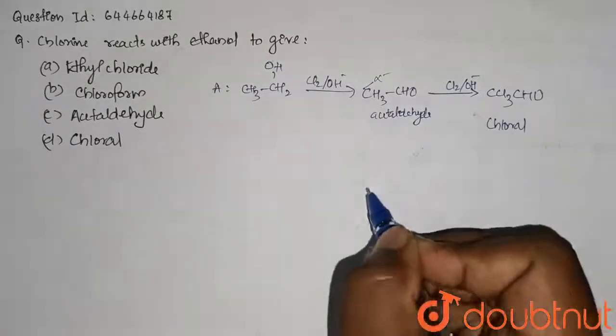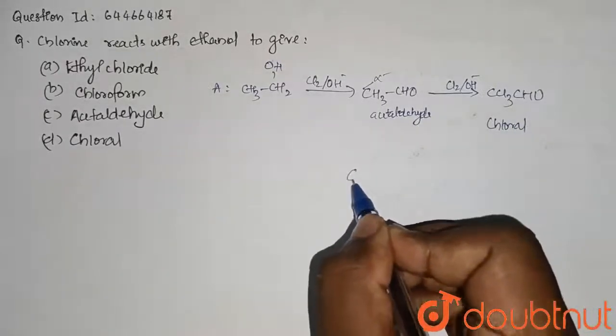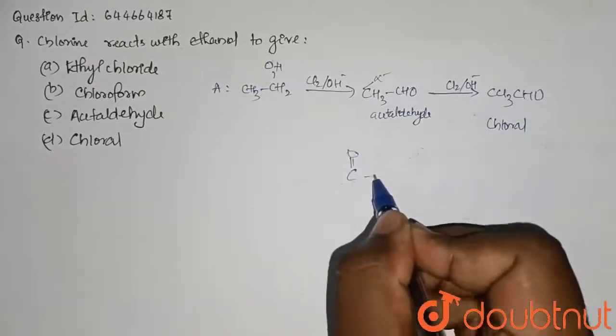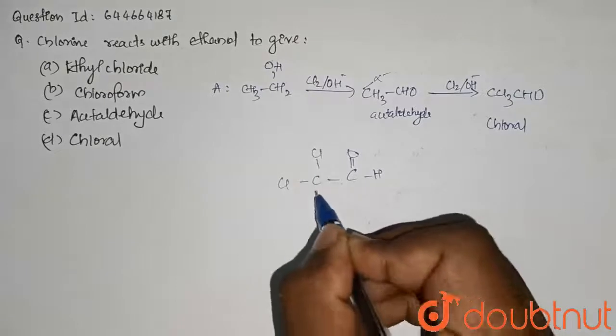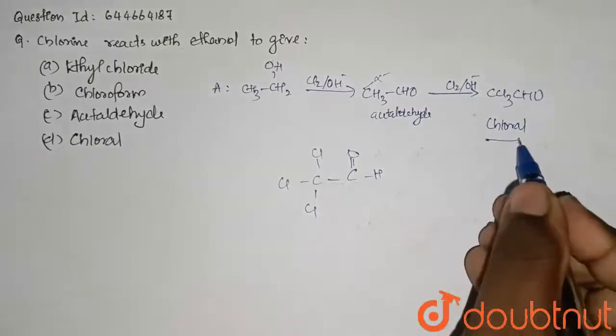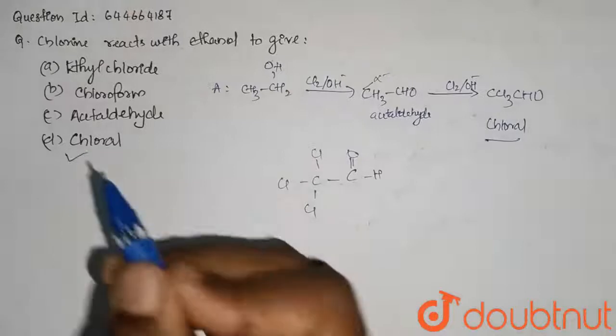So our answer is chloral. Let us draw the structure of chloral that will be C double bond OH, C attached to 3 chlorine molecules. So this is our answer, our final answer is chloral, that is option D.